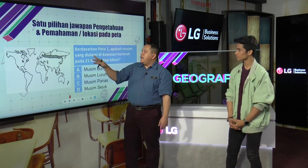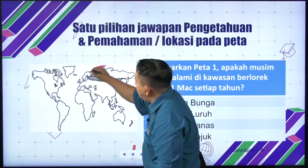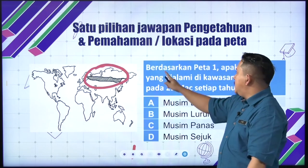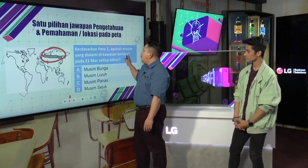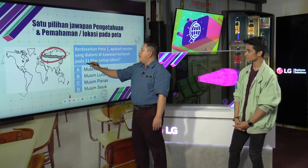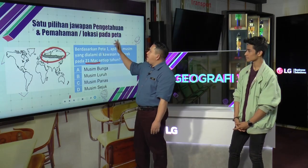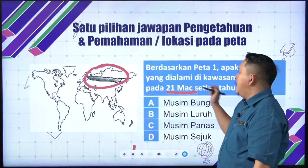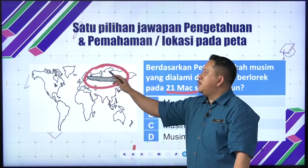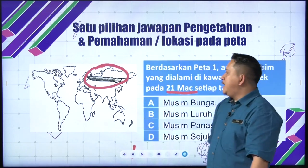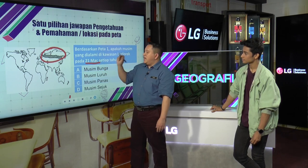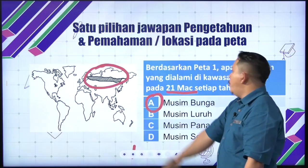Berdasarkan lokasi pada peta, saya bagi contoh. Contoh dia bagi kat sini, lorekan kat sini. Berdasarkan peta satu, apakah musim yang dialami di kawasan berlorek pada 21 March? Ini menguji pengetahuan dan pemahaman. Pengetahuan tentang lokasi ini — negara Rusia. Negara Rusia dan berlaku pada tarikh 21 March. Jawapan dia adalah musim bunga.